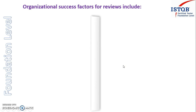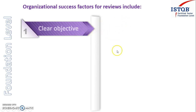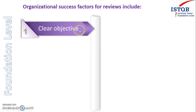The first factor in an organization that can make the review successful is clear objectives. The organization has to make the objectives very clear for everyone so that the review will be successful at the end. Clear objectives means the scope of the review, when the review will start, who all will be the participants, and selecting the individuals.